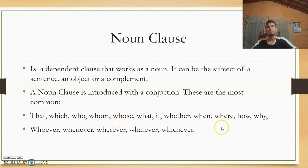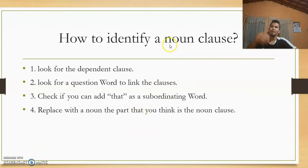A noun clause is introduced with a conjunction, and these are the most common: that, which, who, whom, whose, what, if, whether, when, where, how, why, whoever, whenever, whatever, and whichever. And now, how do we find noun clauses? We have here four steps to identify them. First, look for the dependent clause. Two, look for a question word to link the clauses. Three, check if you can add 'that' as a subordinating word. Four, replace with a noun the part that you think is the noun clause.